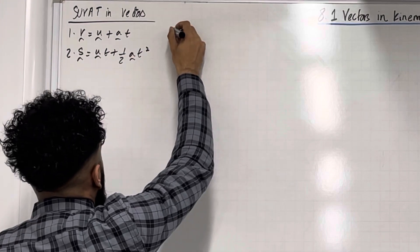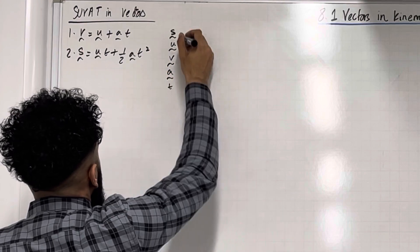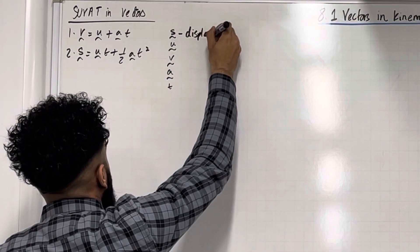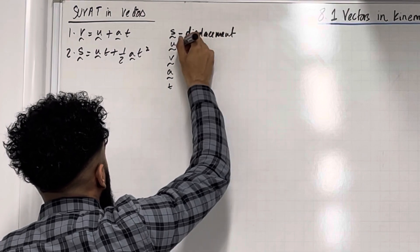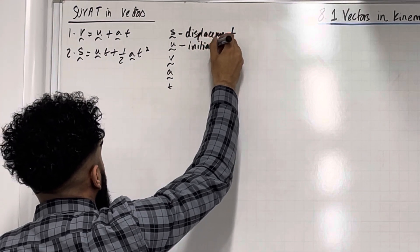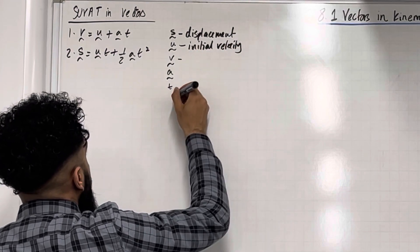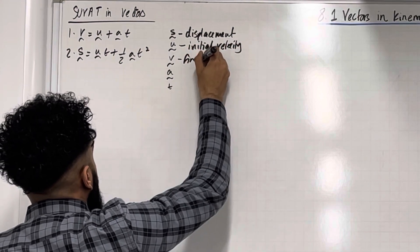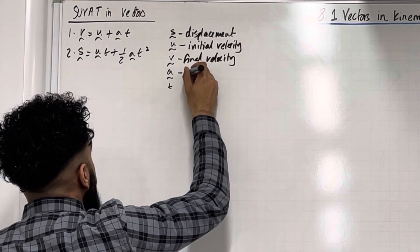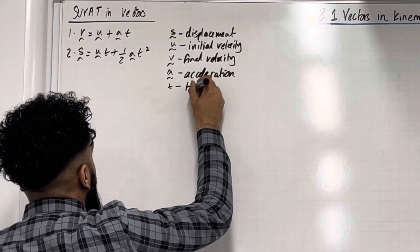So we've got SUVAT. S is the displacement vector. U is the initial velocity vector. V is the final velocity vector. A is the acceleration vector. And T is the time.